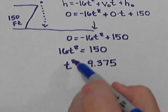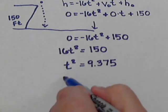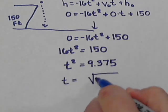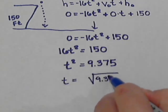And now, how do we get rid of the square? We use the square root. So to get the T, I end up with the square root of 9.375.